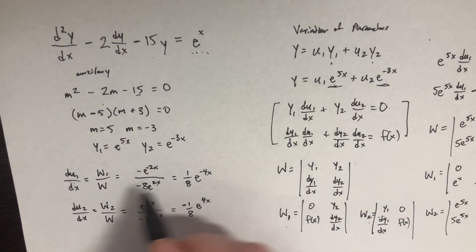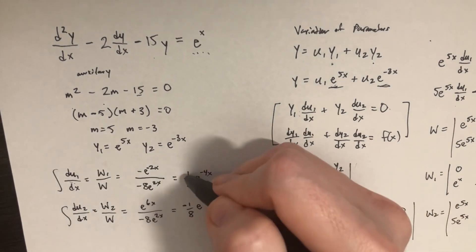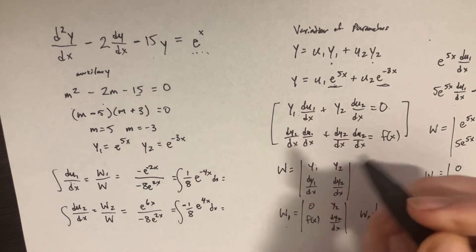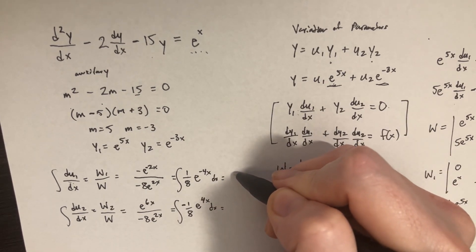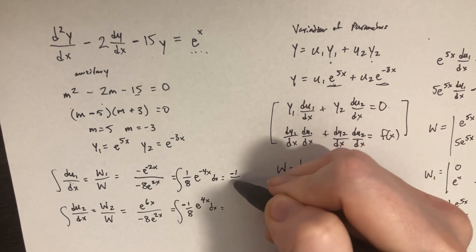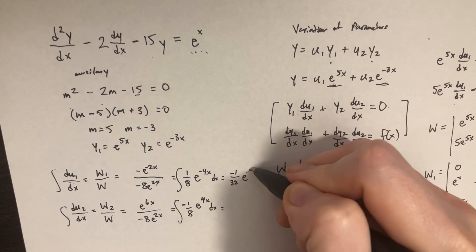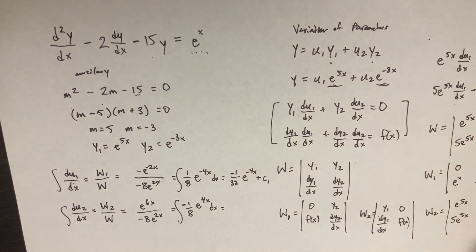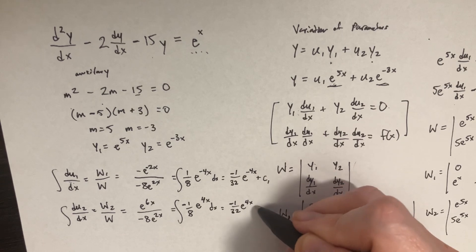Keep in mind these are derivatives, so we need to integrate. Integrating (1/8)e^(-4x) dx gives u1 = -1/32 * e^(-4x) + C1. Integrating (-1/8)e^(4x) dx gives u2 = -1/32 * e^(4x) + C2.